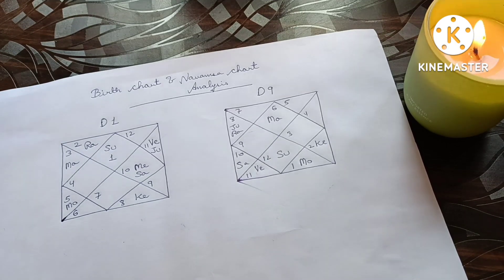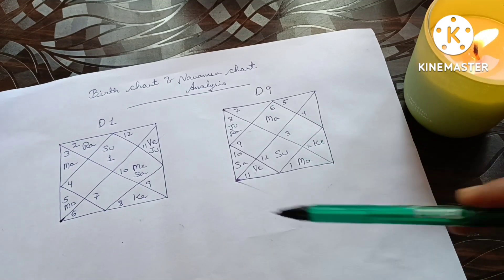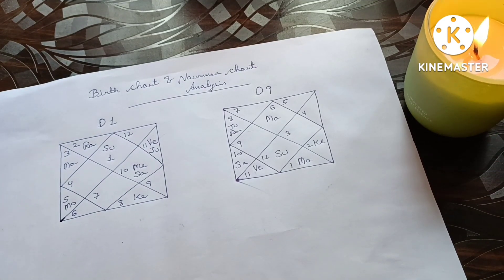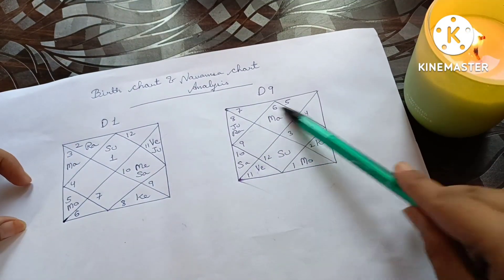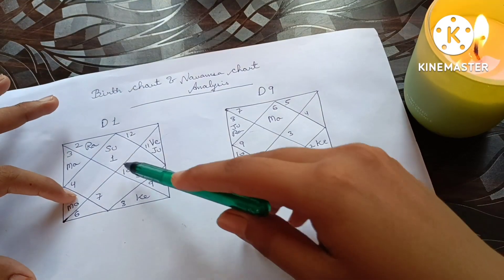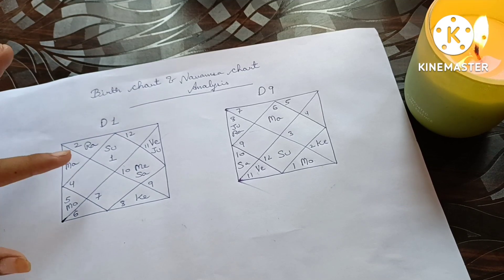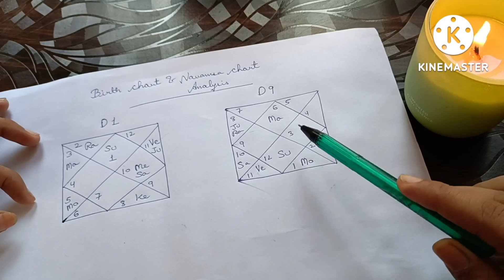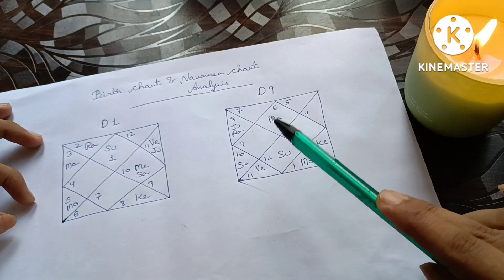The Navamsha chart is essentially a destiny chart. It can tell you about marriage, career, and what your destiny particularly is going to be — what type of person you are internally and what each planet is actually doing in your horoscope. For example, this person has an exalted Sun, making them a powerful person with leadership qualities.